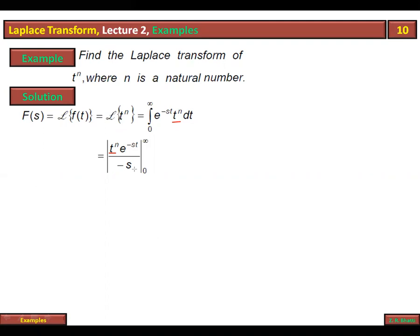Integration by parts کا first step ہم نے کر لیا: keeping first function as it is and integrating the second function, then minus sign فارمولے کا آتا ہے۔ پھر second function e^(-st) / (minus s) اور first function کا derivative لیا جائے گا — یعنی t^n کا derivative لیں گے۔